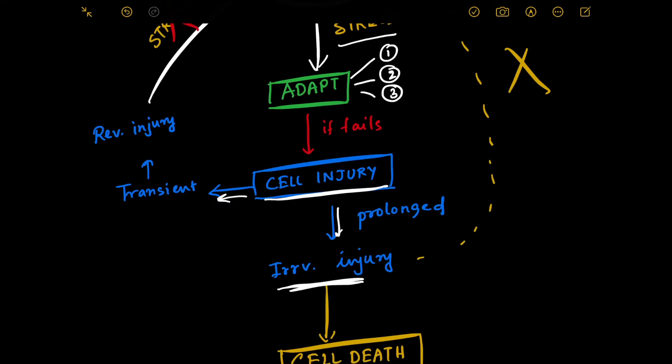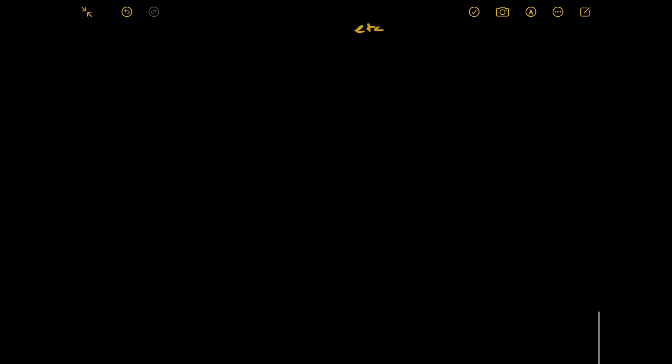Now in this video, we will try to understand how under different types of stresses, cells adapt differently. Let's understand one simple thing. Let's talk about stress. Stress can be normal, stress can be increased, stress can be decreased, or stress can be altered.